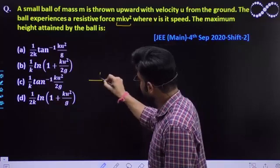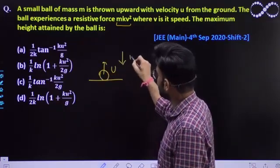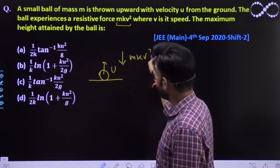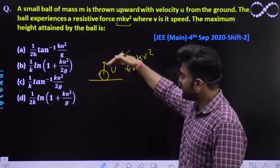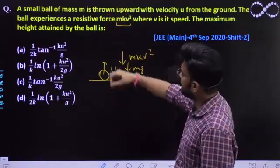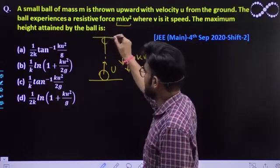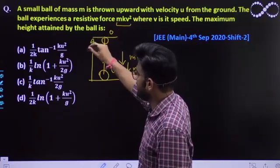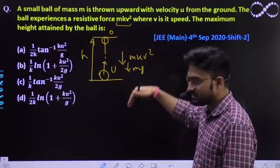We'll quickly visualize the question. You have thrown it with speed u upward. Now a constant resistive force will act on it, mkv². Already gravity is also acting in the same direction. So gradually the speed will decrease and it will reach maximum height where the speed finally becomes zero.